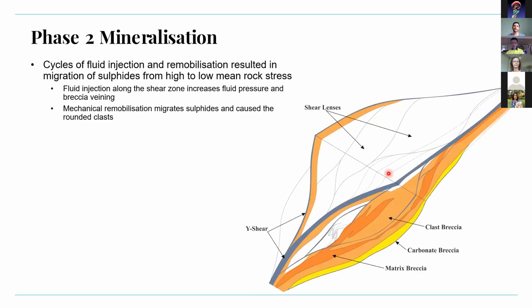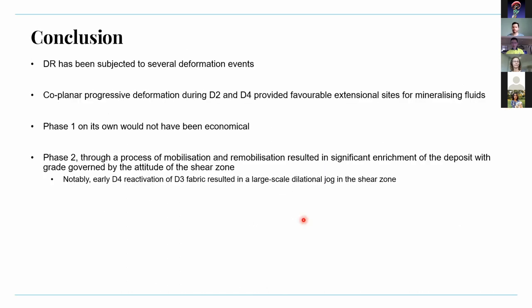In the south mine, the shear zone has a flatter geometry. While transposition has locally occurred along localized steep shears, the dominant mineralization style here is one of combined mobilization and remobilization — specifically mechanical remobilization to form the matrix breccia with rounded clasts.